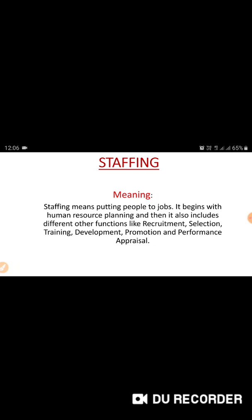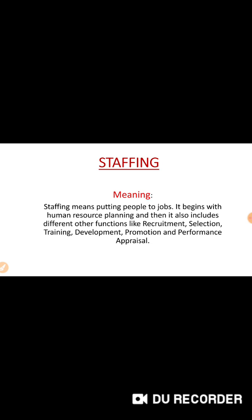Why? Because in an organization, a single person cannot do all the activities. So, he needs certain members or employees. Selecting a good, suitable employee in the organization — making the recruitment — is called staffing. Selection of the right person in the right place is called staffing. Staffing means putting people to jobs — selecting people for a job or selecting employees in the organization.